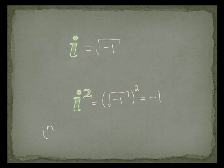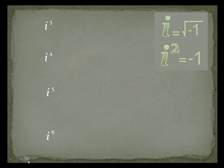When we're going to be simplifying i to the n powers, I want to break this down into as many i squareds as I can, because i squared means negative 1. For example, i to the third is i squared times i — I have three i's here. i squared is negative 1, times i. Negative 1 times i is negative i.